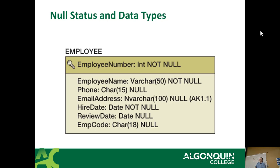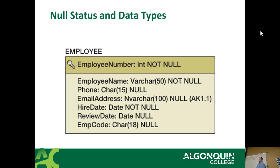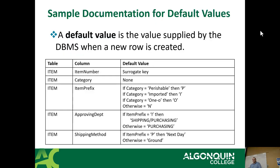Here's our employee table after applying null status and data types. Employee number is an INTEGER, NOT NULL. Employee name is VARCHAR(50), NOT NULL — that will cover a significant number of people, though personally I always go for 100. Phone numbers are CHAR(15) because North American phone numbers are 14 characters technically. Email address is VARCHAR(100), nullable. Hire date just needs the date, we don't care about time.